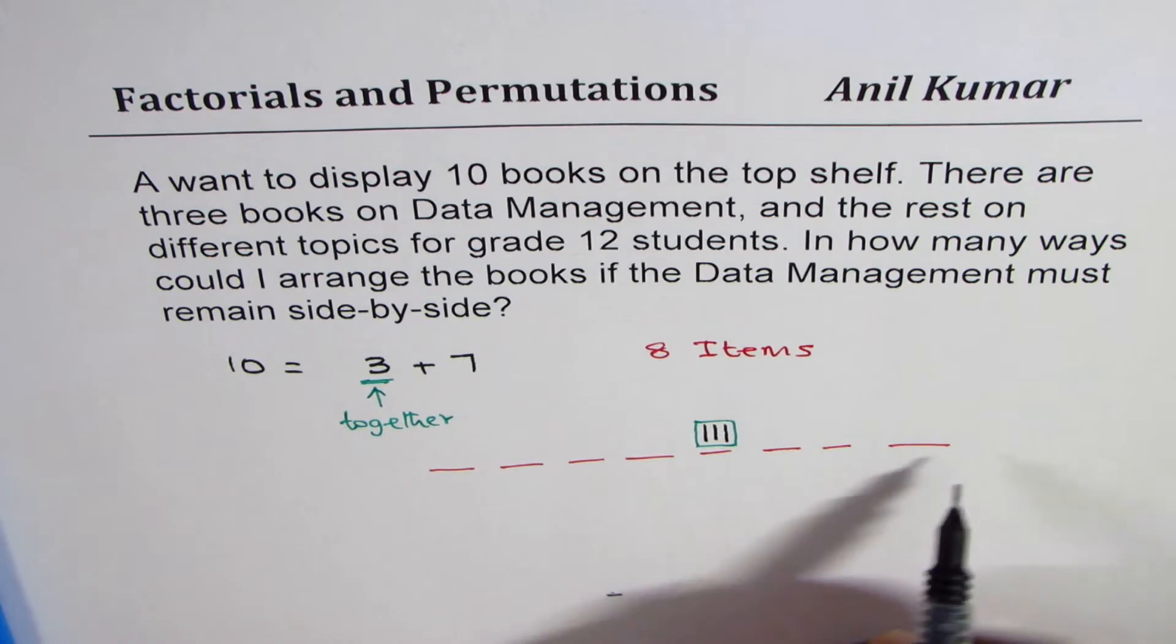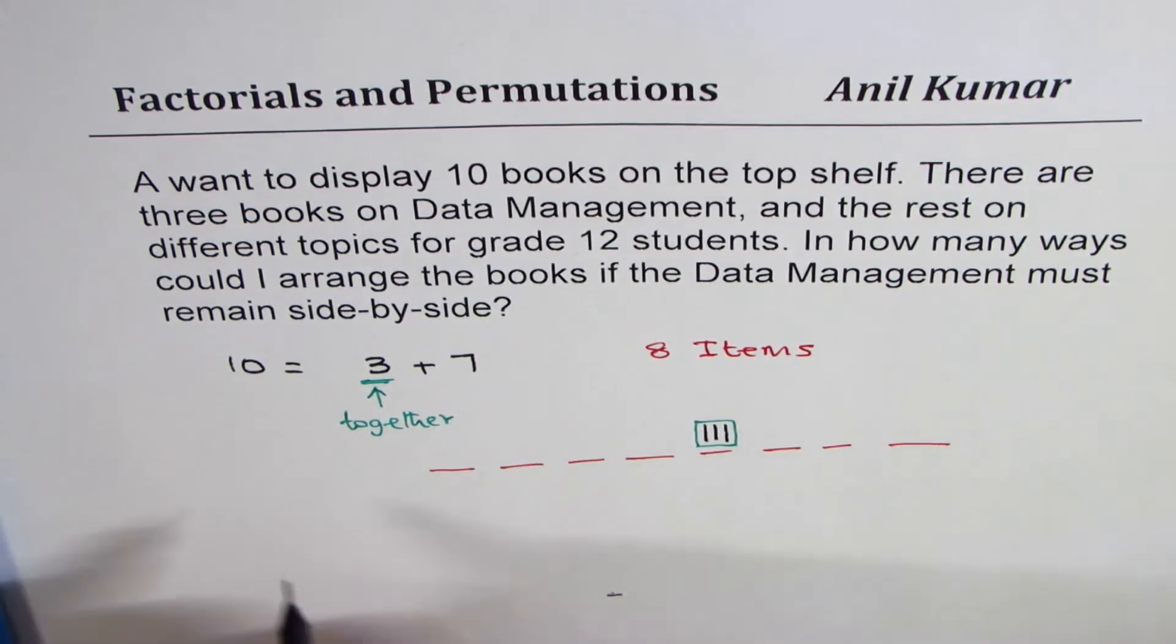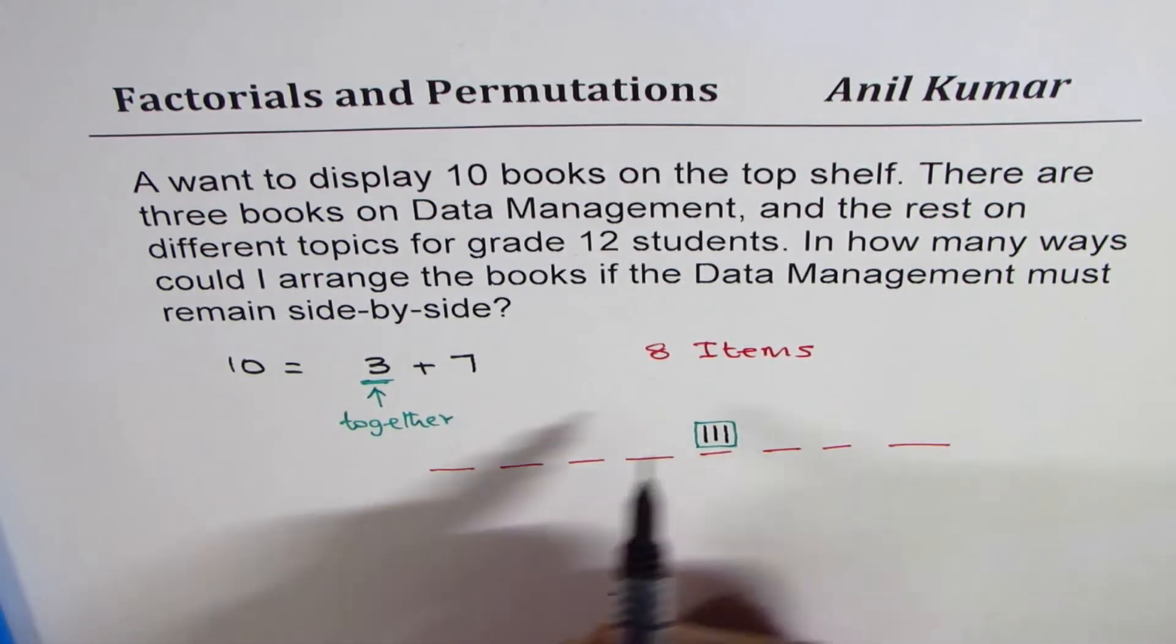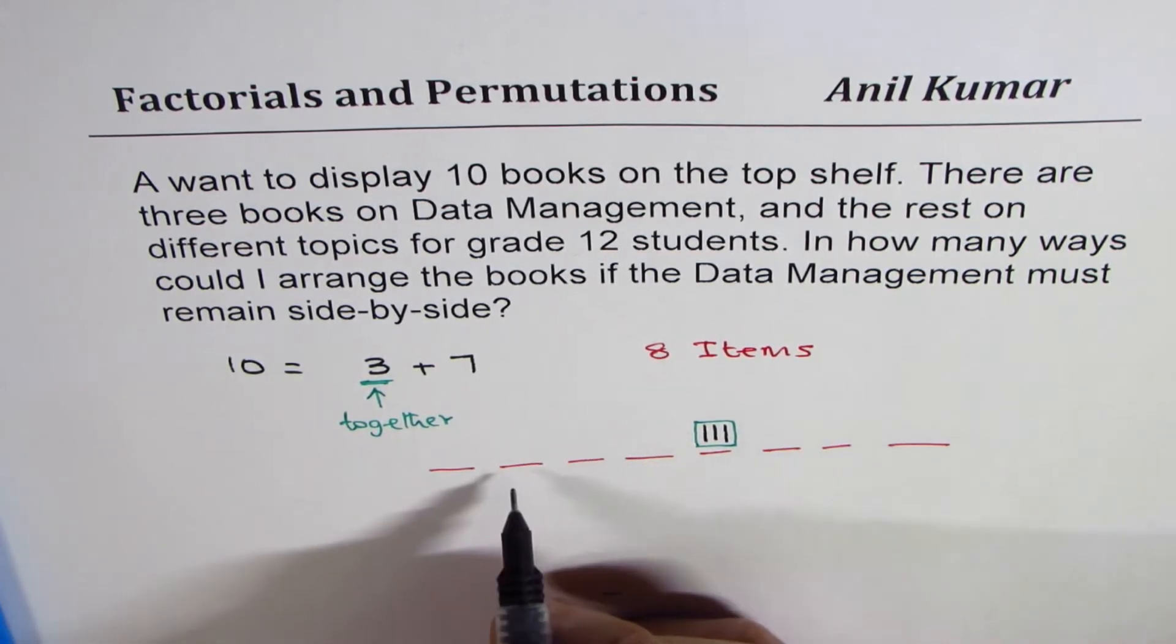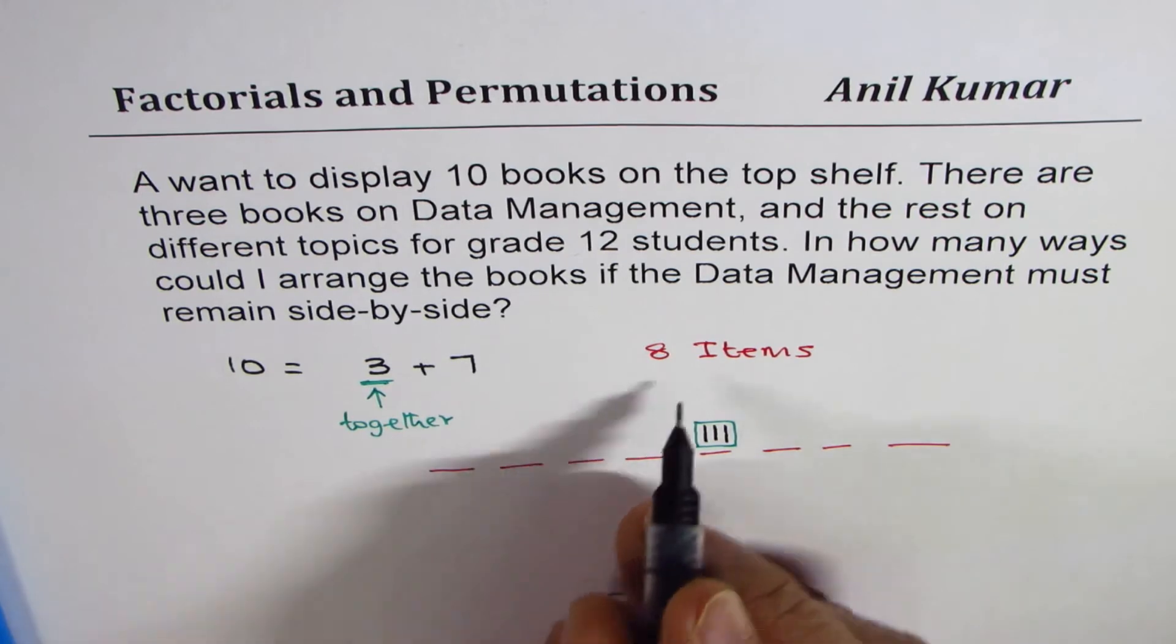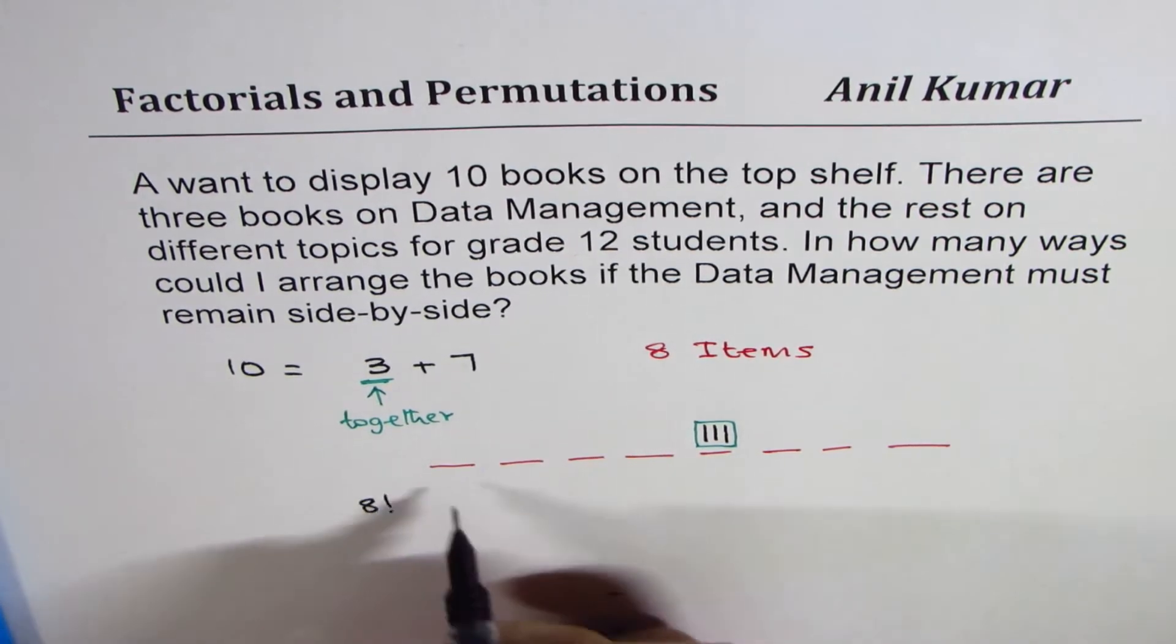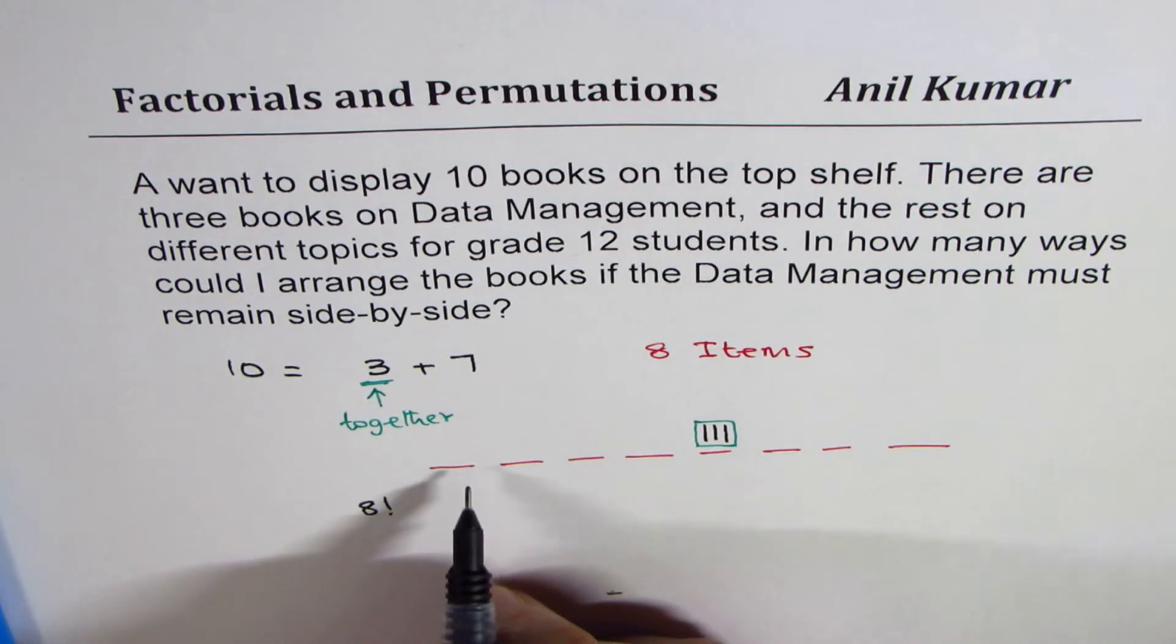Now, how many ways can I arrange all these 8 items? So, number of ways are 8 factorial. So, first step is arrange them in different ways. So, that is 8 factorial are total number of ways in which I can arrange all of them.